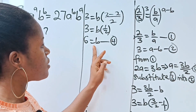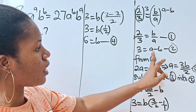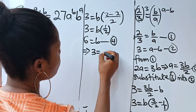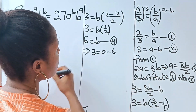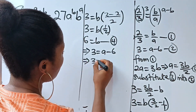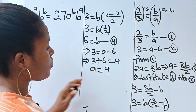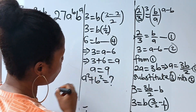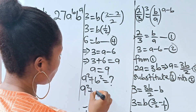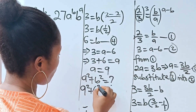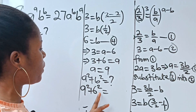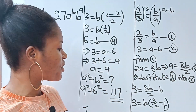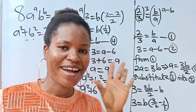Now, with b equal to 6, let's substitute into equation 2 to get a. So 3 equals a minus 6, which means a equals 3 plus 6, so a is 9. Back to the question: a squared plus b squared is 9 squared plus 6 squared, which is 81 plus 36, and that equals 117. That's the solution. Thank you so much for watching. Have a lovely day.